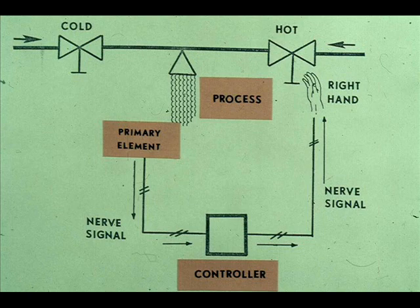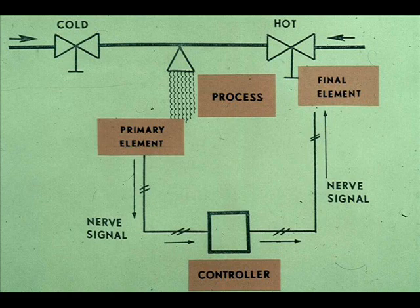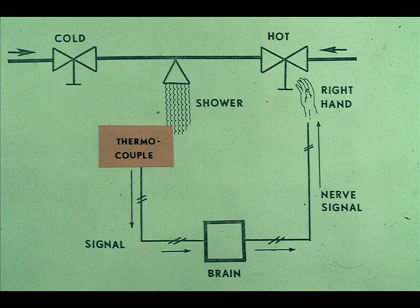In this control loop, the process is the shower-water, so we replace the word shower with process. The primary element is the left hand, which is sensing the temperature of the water. We replace the left hand with primary element. The controller is the brain. It takes the nerve signal from the left hand, compares this value with the set point, which is the desired temperature, and then sends a nerve signal to the right hand to take the necessary action to obtain the desired set point, or water temperature. The final element is the right hand shower valve, with the measurement and control signals being the nerves. We replace the right hand with final element.